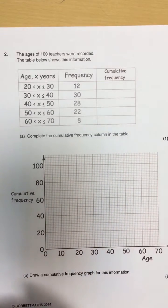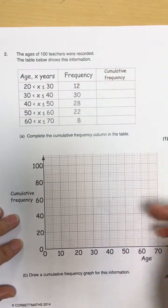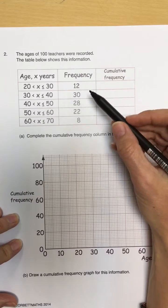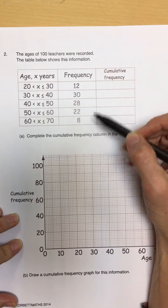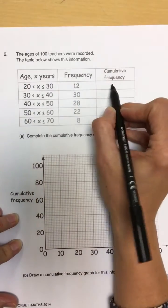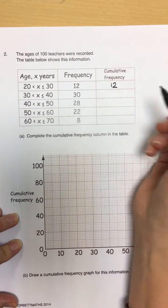Complete the cumulative frequency column in the table. So, cumulative frequency basically means we are accumulating the frequency. So we're basically completing a running total. So, in the first row of this table, there are 12. So my cumulative frequency is 12.